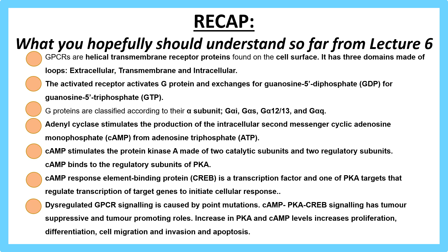Dysregulated GPCR signaling is caused by point mutations, which range from silent to missense mutations. The cAMP-PKA-CREB signaling has both tumor suppressive and tumor promoting roles. Increases in PKA and cAMP levels increase proliferation, differentiation, cell migration, invasion, and apoptosis in tumor-related cancer cells.